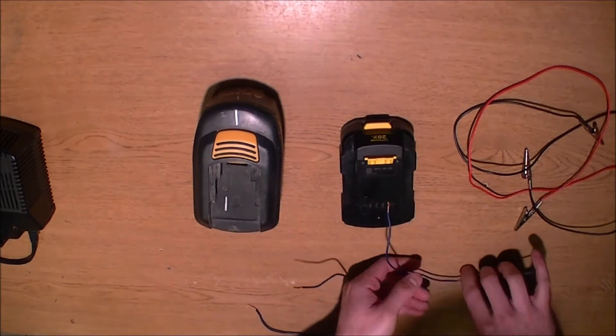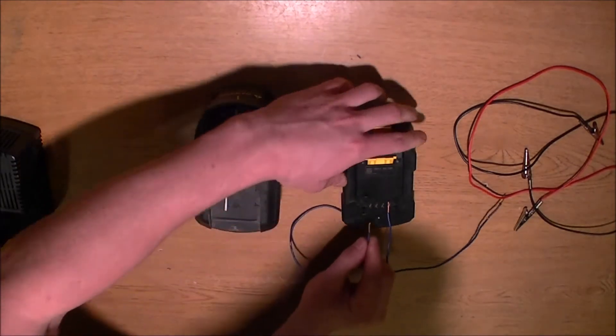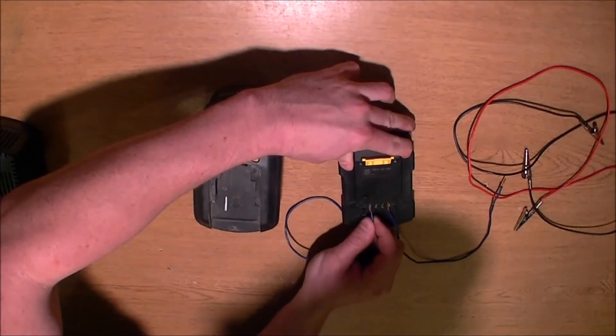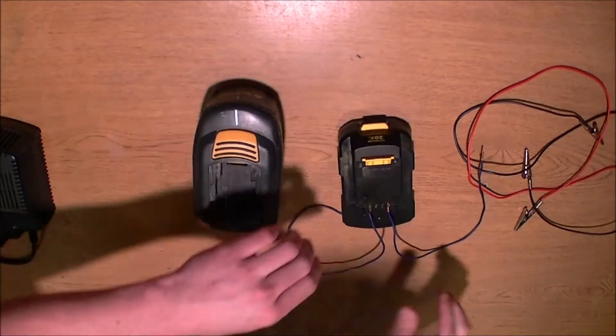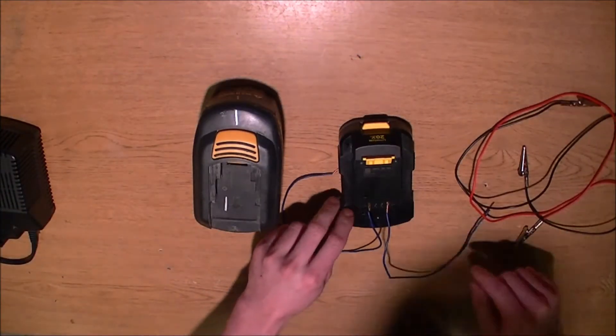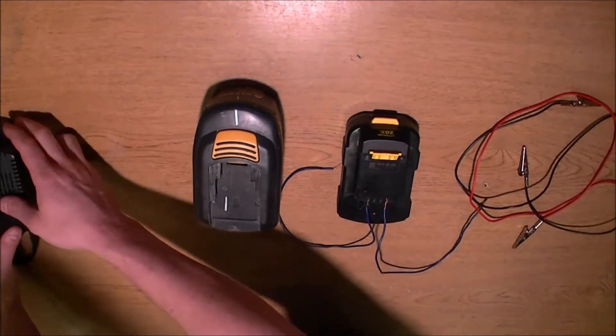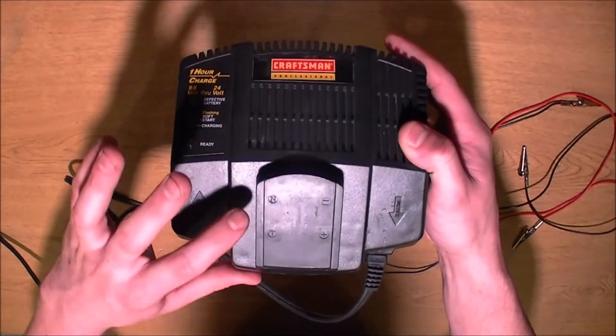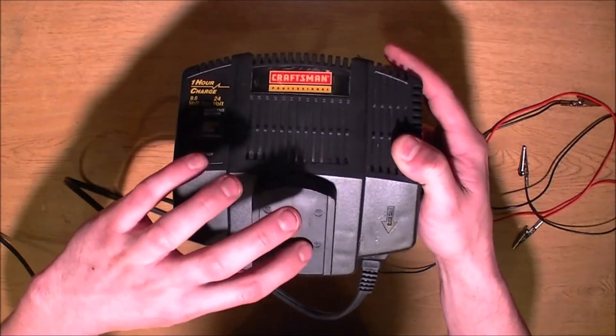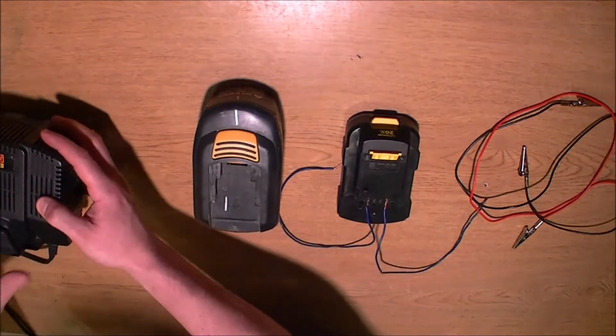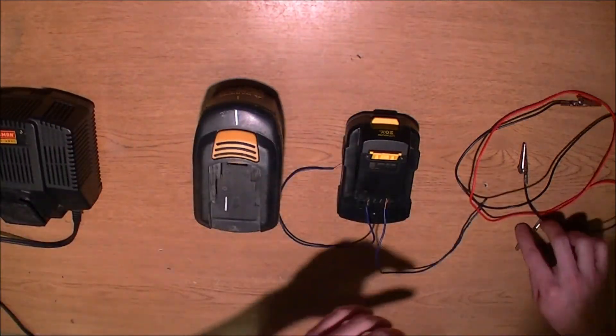On this side I got negative. And if you don't know where negative and positive is, you can just look on your battery and it usually shows you or look at your charger. On this one in particular it shows you the negative and positive right here on the charger. So when you slide your battery just flip it over and look.